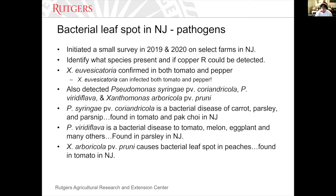We also found some other interesting things. We detected Xanthomonas syringae, which is a bacterial disease of carrot and parsnip, and we also found that on tomato and Pak Choi in New Jersey. Xanthomonas viridifluva is a bacterial disease of tomato, melon, eggplant, and many other crops — we found that in parsley during the past couple seasons. And one other interesting bacterium we found was Xanthomonas arboricola pathovar pruni, which causes bacterial leaf spot in peaches — we also found that in tomato in the northern part of the state.